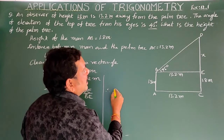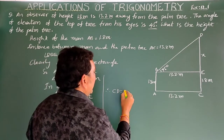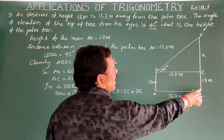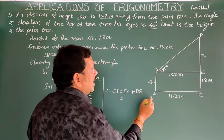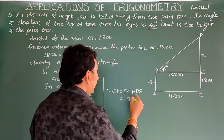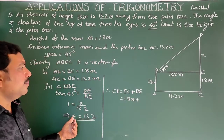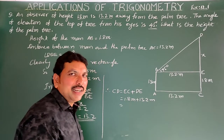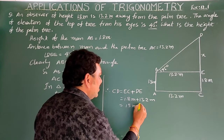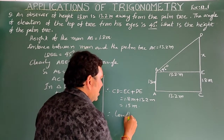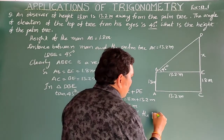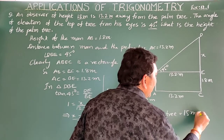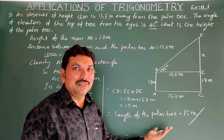Therefore CD = EC + DE = 1.8 + 13.2 = 15 meters. The length of the palm tree is 15 meters.